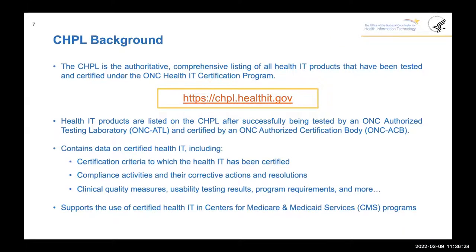The CHPL is the authoritative comprehensive listing for all health IT products that have been tested and certified under the ONC Health IT Certification Program. Health IT products are listed on the CHPL after successfully being tested by an ONC Authorized Testing Laboratory (ONC ATL) and certified by an ONC Authorized Certification Body (ONC ACB). The CHPL contains data on certified health IT including certification criteria, compliance activities, corrective actions and resolutions, clinical quality measures, usability testing results, program requirements, and much more. The CHPL also supports the use of certified health IT in Centers for Medicare and Medicaid Services programs.